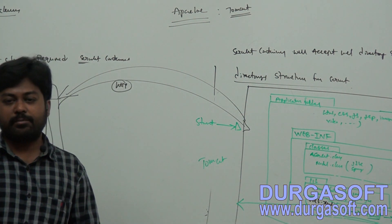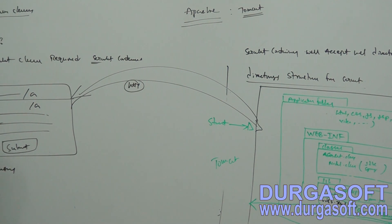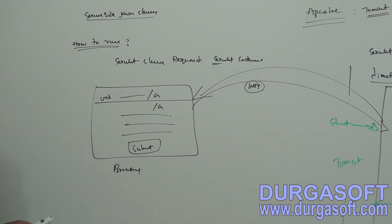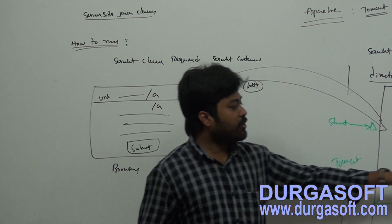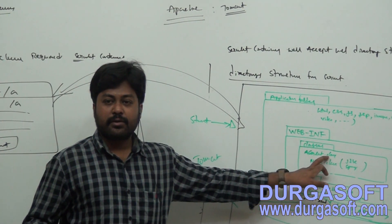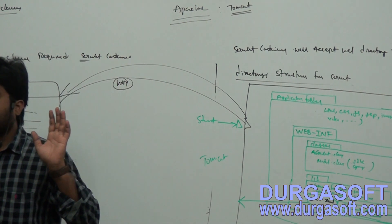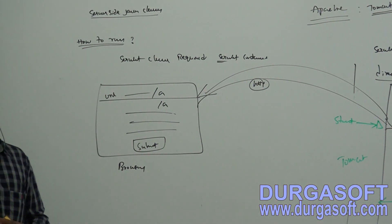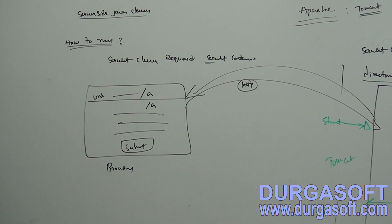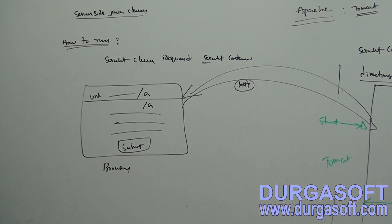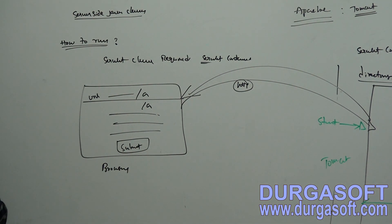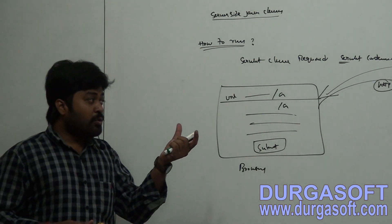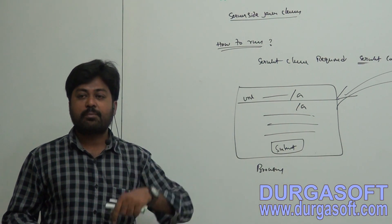There are many tags in web.xml and we will discuss all of them later. This is the directory structure you need to follow. Inside the classes folder, which classes do you need to put? Servlet classes only. But is a servlet a simple Java class? It is not a plain Java class — you need to extend your servlet classes from the servlet API.